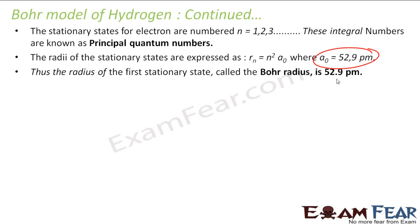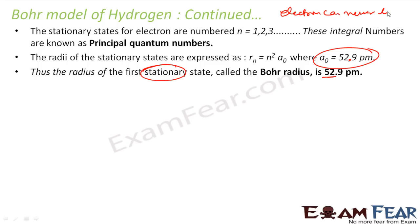It is 52.9 pm actually. So if you put n = 1, you get the radius of the first stationary state as 52.9 pm. Please note that stationary state does not mean the electron is stationary — it is not possible to have a stationary electron. It can never be stationary.